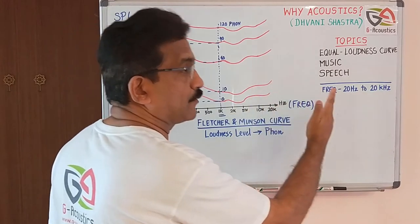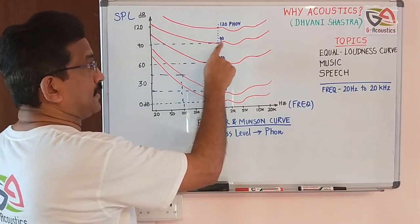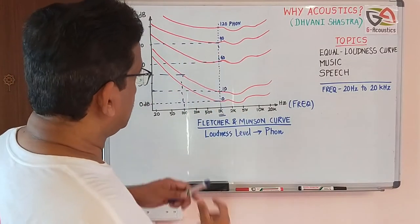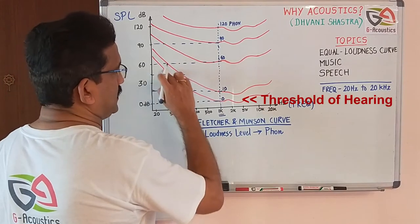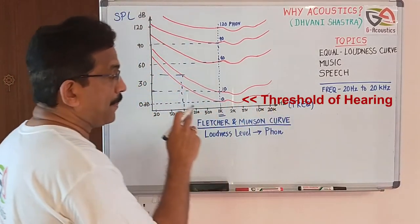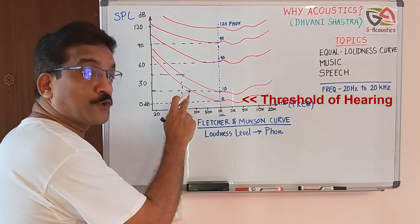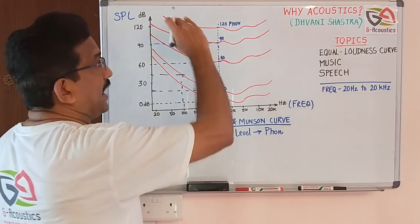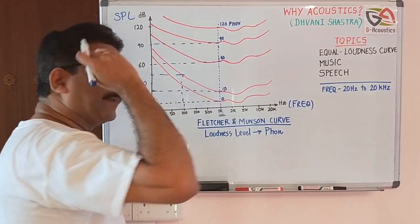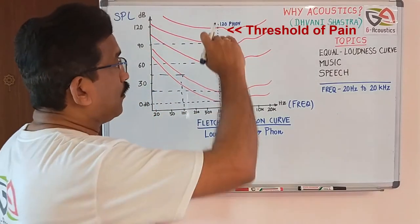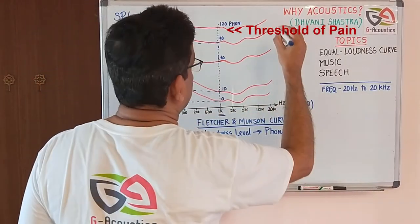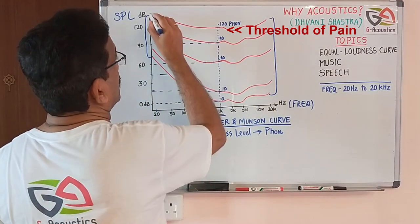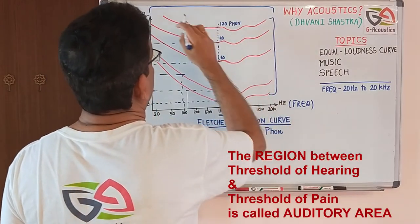For the human ear, the equal loudness curve varies from frequency to frequency. At 94 phons, there is not much difference across frequencies. The bottom curve is the hearing threshold, above which the auditory level starts. The upper boundary is called the threshold of pain — the maximum level the human ear can tolerate.